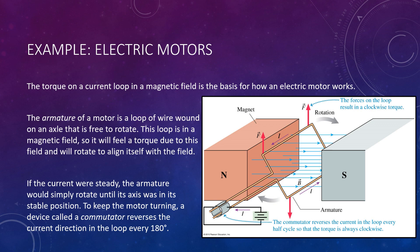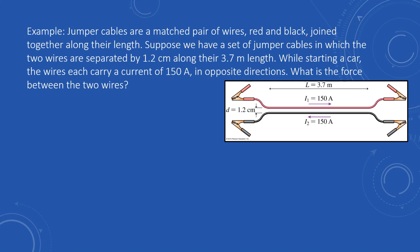Let's conclude with an example and a few quick check questions. Jumper cables are a matched pair of wires, red and black, joined together along their length. Suppose we have a set of jumper cables in which the two wires are separated by 1.2 centimeters along their 3.7 meter length. While starting a car, the wires will each carry a current of 150 amps in opposite directions. The question asks: what is the force between these two wires?